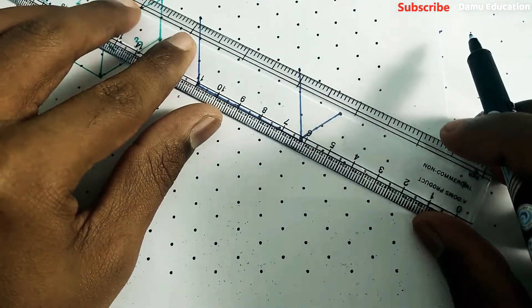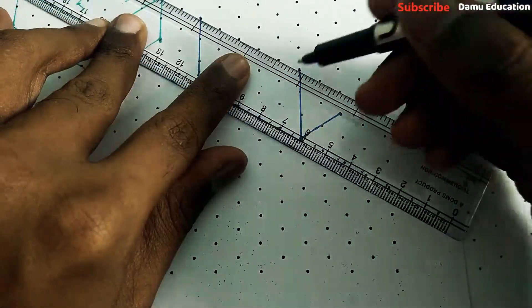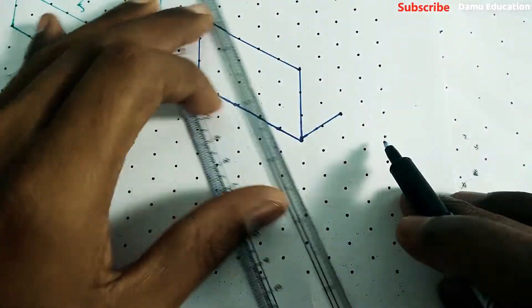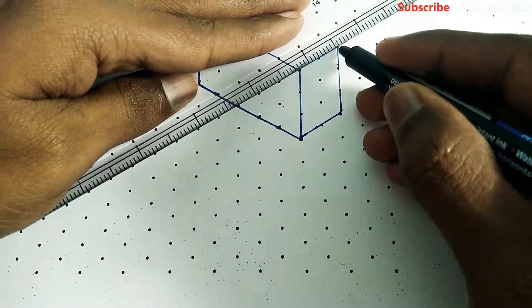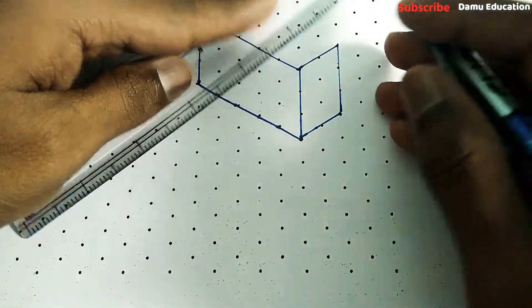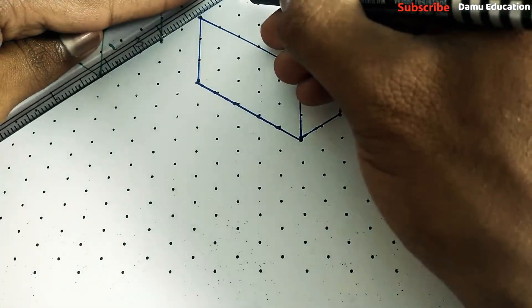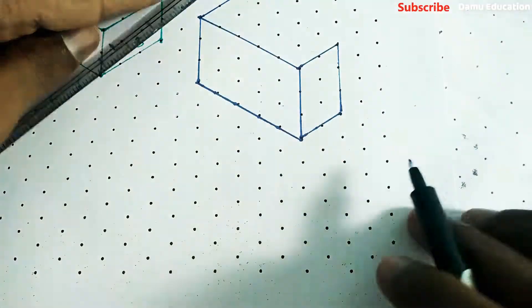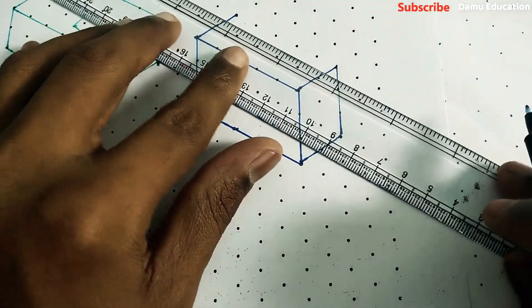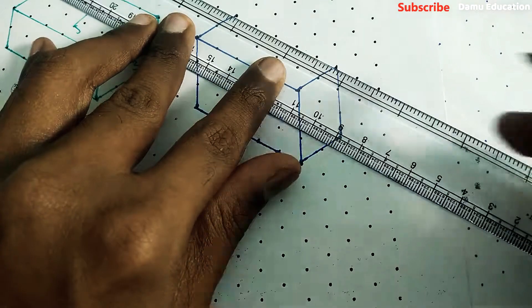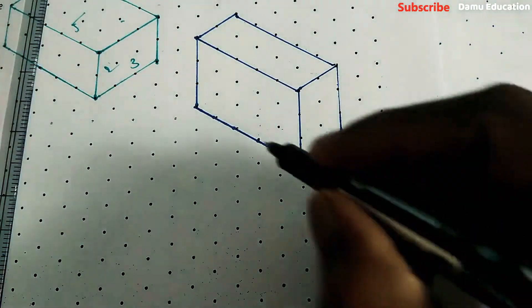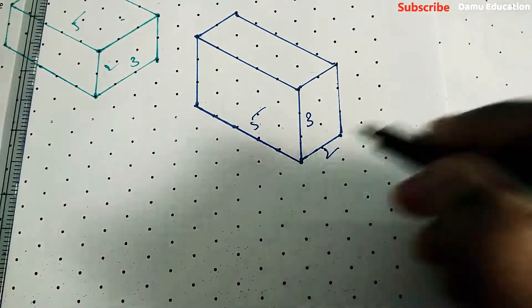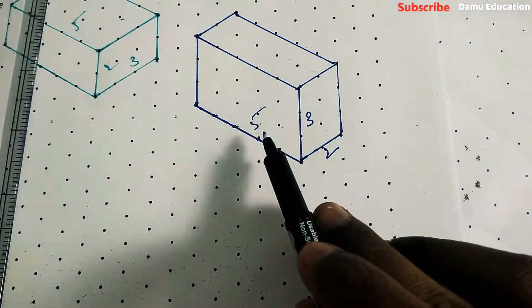Draw this cuboid with a measurement of 3 height and width 2. So it will be like this. There are no horizontal lines in isometric sketches. Always it will be inclined lines or cross lines and only vertical lines.